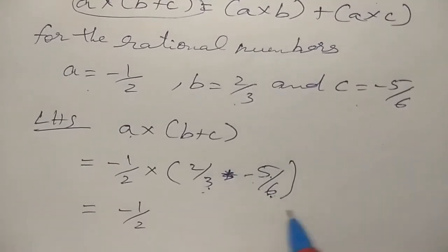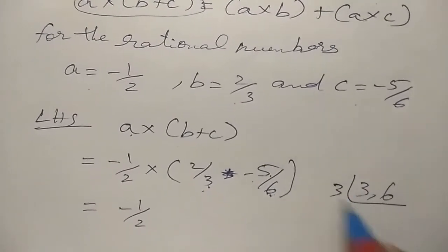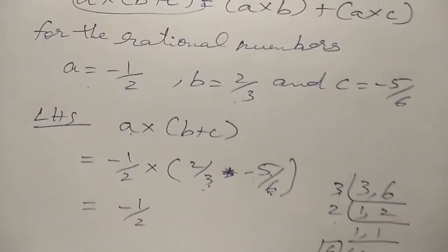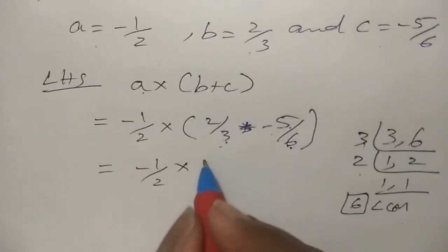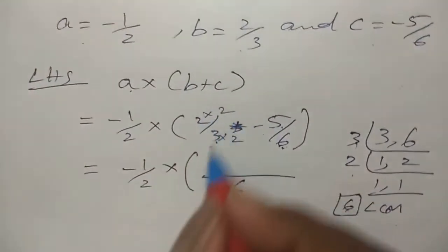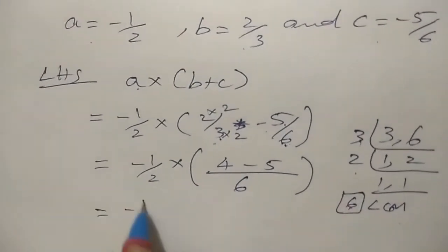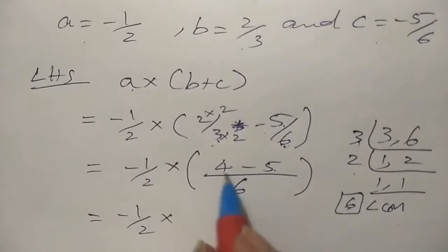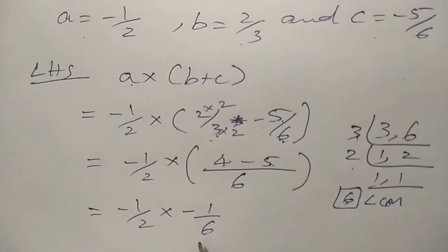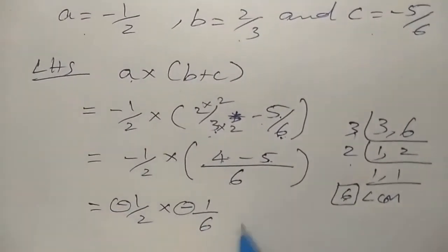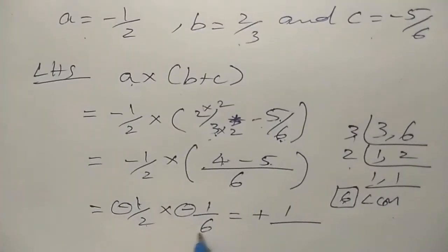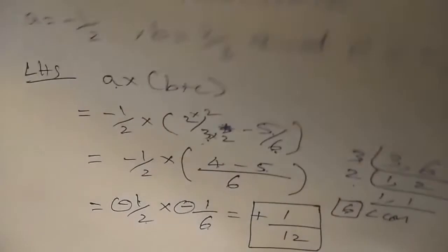LCM of 3 comma 6: 3 ones are 3, 3 twos are 6 — LCM is 6. Multiply 2 by 3 by 2: 4. So inside the bracket: 4 minus 5 equals minus 1. Left hand side equals minus 1 by 2 into minus 1 by 6. Negative into negative is positive: 1 into 1 equals 1. Denominator: 2 times 6 equals 12. Left hand side equals 1 by 12.